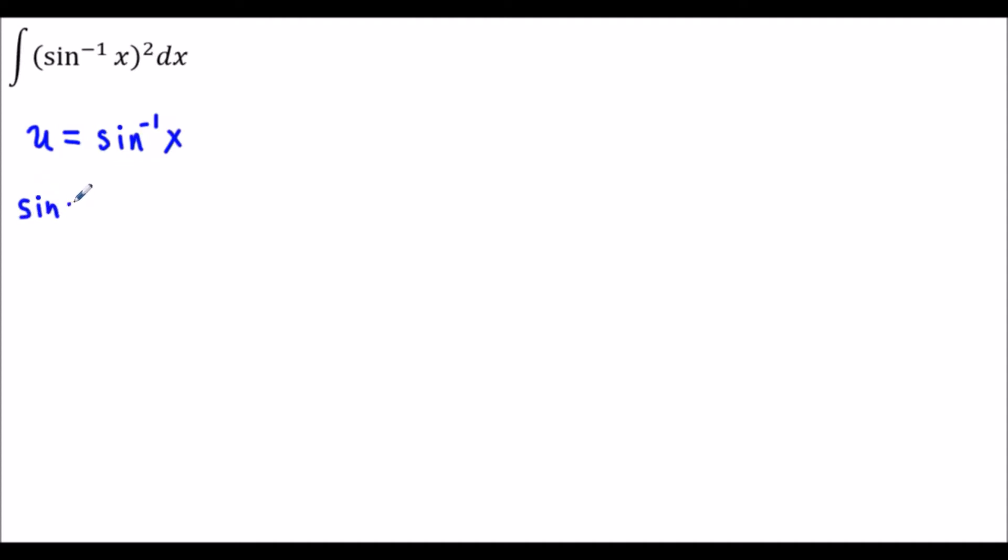We'll have sine of u is equal to x and we'll see what does this look like if we modeled it with a right triangle. If we drew a right triangle called the angle u, then since sine of u equals x we could label the opposite side x and the hypotenuse 1. If we use Pythagorean theorem that's going to tell us the missing side is radical 1 minus x squared.